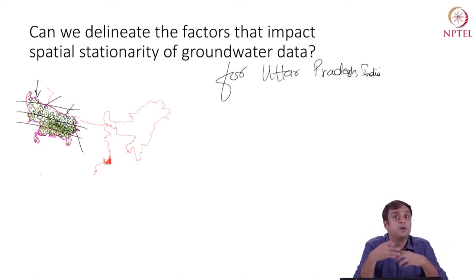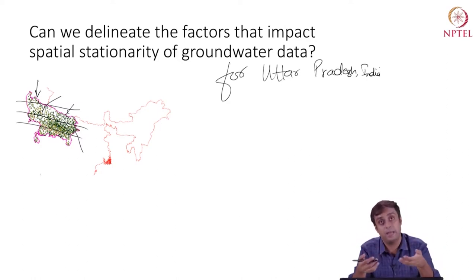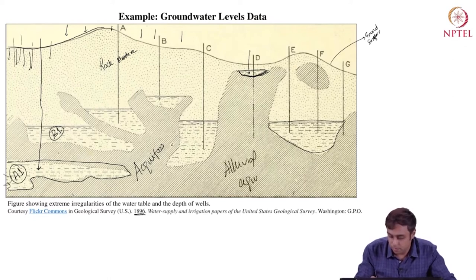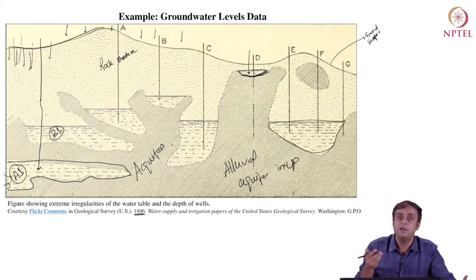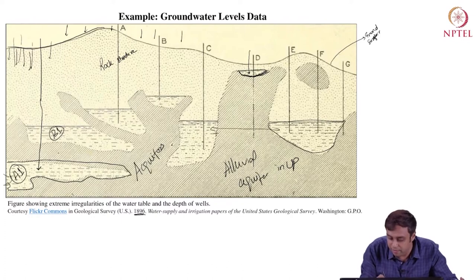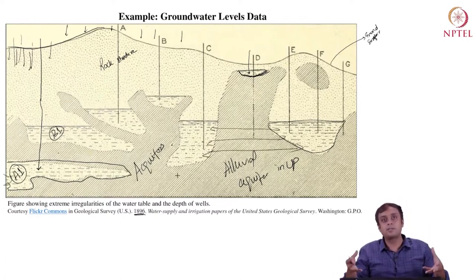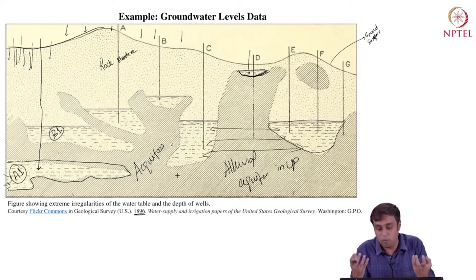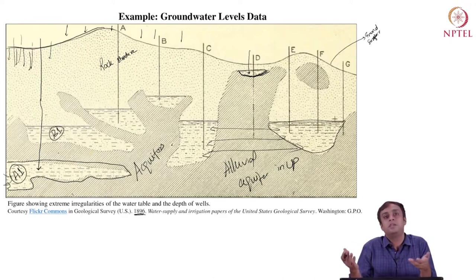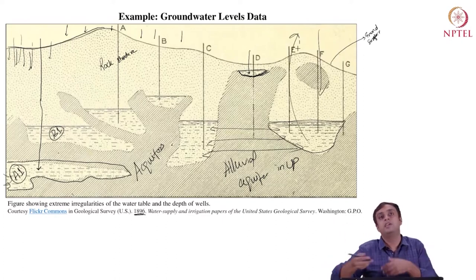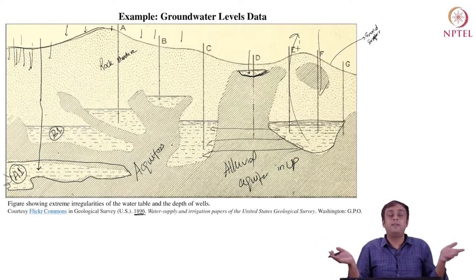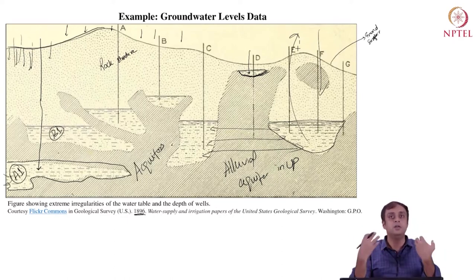We need something more than arbitrary demarcation of stationary areas, and as you have seen earlier, perhaps we need expert domain knowledge. One of those expert domain knowledges is the knowledge of aquifer types. One of the things about the aquifer in UP is that it is an alluvial aquifer, which means there is very high lateral movement of water between these tubs. The rocks are porous in nature — water is all the time traveling across these rocks. The UP region in general is an alluvial aquifer and hence quite porous.